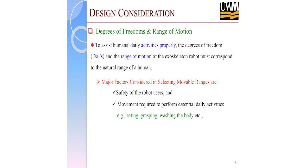Now for design considerations. When designing a robot for human upper or lower limb or hand, we must first consider the degrees of freedom and range of motion that exist for humans. The robot should be designed to cover all the degrees of freedom and range of motion, otherwise it will only be helpful for a particular group of patients.